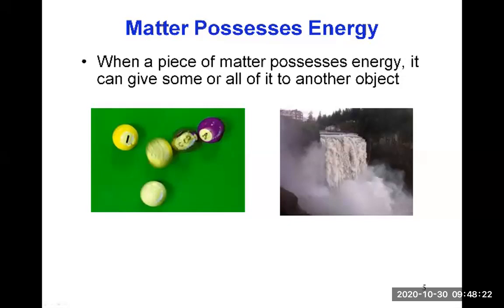When a piece of matter possesses energy, it can give some or all of it to another object. There's an illustration here showing billiard balls hitting each other. When one ball hits another, it transfers some of its kinetic energy, and the other ball will now have kinetic energy and move. They can transfer energy from one ball to another to yet a new one, and so on.